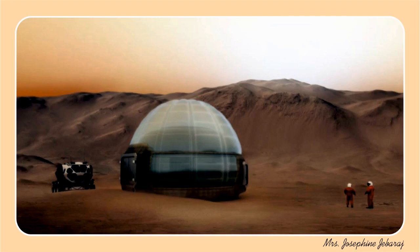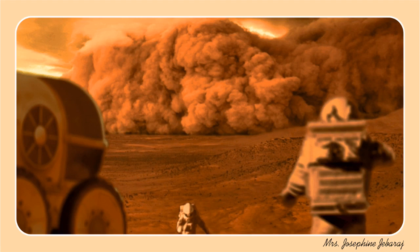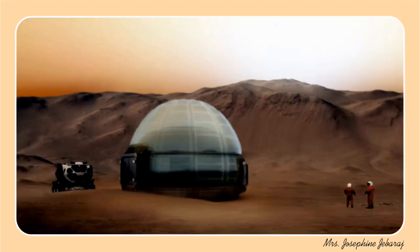Arirumadi was surprised to see her grandpa because she never thought he would come for her birthday. Then grandpa spoke about the dust storms of Mars. The dust storms on Mars are the largest in the solar system and can last for months, covering the entire planet, because Mars does not have a magnetic field to protect it from solar wind. He told that he traveled for three Martian days — or sols — to reach there. One Martian day is 24 hours, 39 minutes, and 35 seconds.